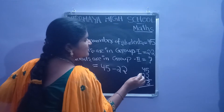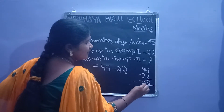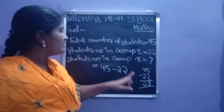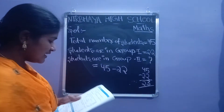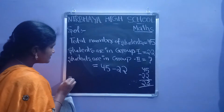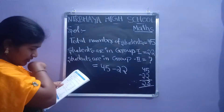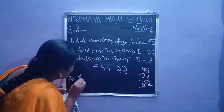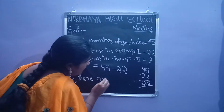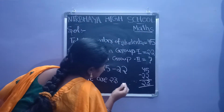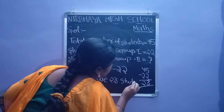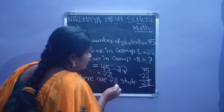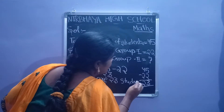4 minus 2, draw 4 lines, remove 2 lines. Remaining are 2. So students in group 2 are 23. There are 23 students. Can you write 23, children? So there are 23 students. This is the rough work, children. There are 23 students in group 2.